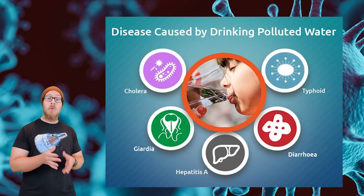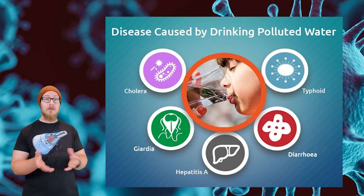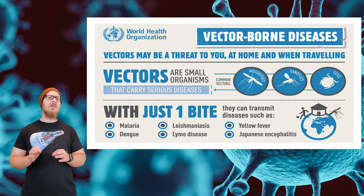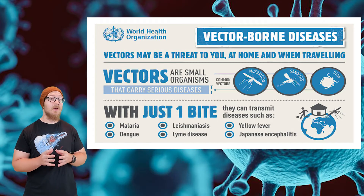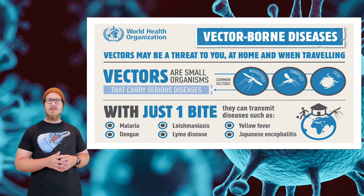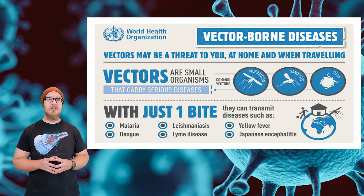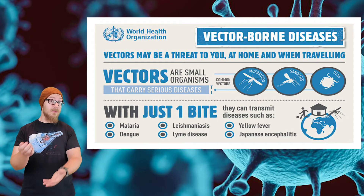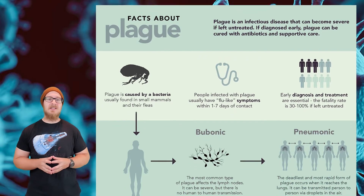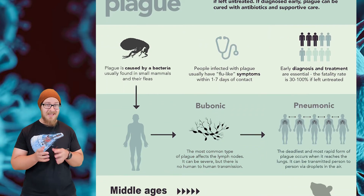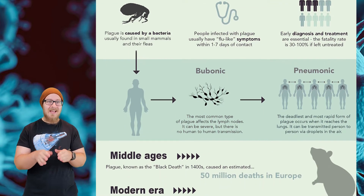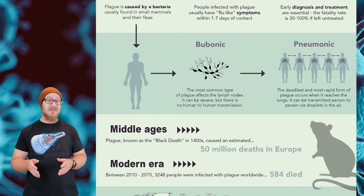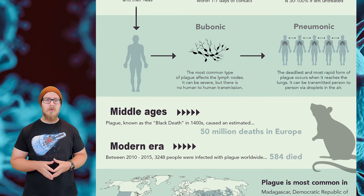Some pathogens are waterborne, meaning they are spread through infected drinking water, like cholera. And some pathogens require a vector, which is any organism that carries and transmits disease. An example of a vector is a mosquito, which is the vector responsible for transmitting the West Nile virus. Plague is a disease carried by organisms infected with the plague bacteria — yes, that plague, it's still around. A handful of people get the plague every year in the United States, and around the world more commonly.